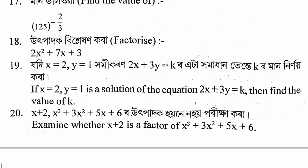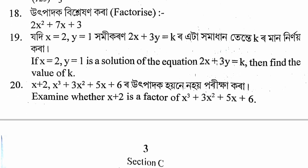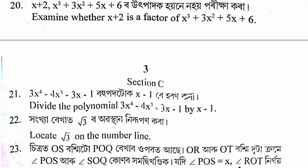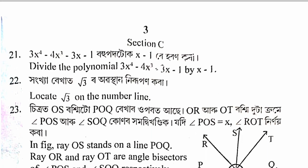Section 4, question: x plus 2x cubed plus 3x squared plus 5x plus 6, check whether it is a factor or not. Section 2, exercise 2.3, question 21: divide 3x to the power 4 minus 4x cubed minus 3x minus 1 by (x minus 1) using polynomial long division.